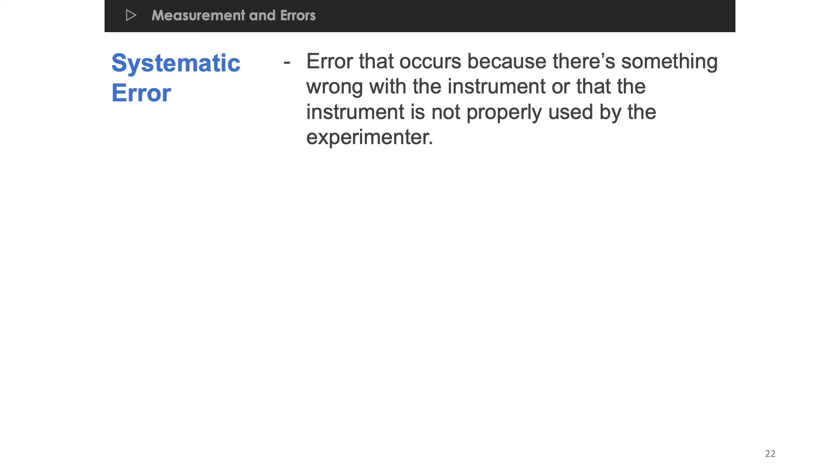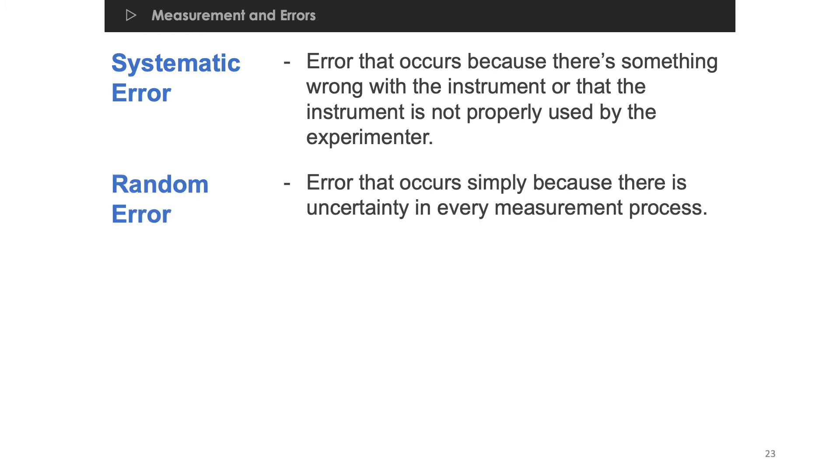An error can be classified as either a systematic error or a random error. A systematic error is an error that occurs because there's something wrong with the instrument or that the instrument is not properly used by the experimenter. On the other hand, a random error is an error that occurs simply because there is uncertainty in every measurement process.